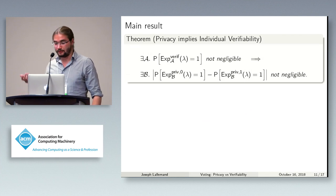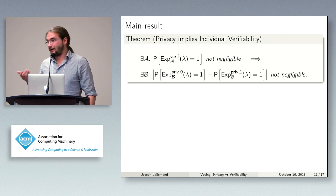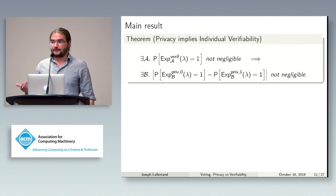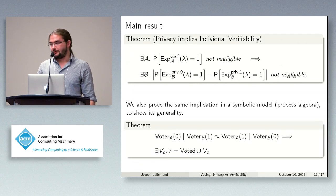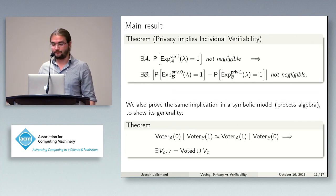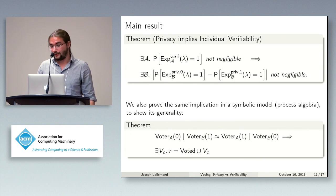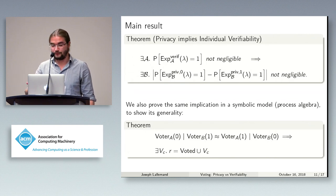With this definition, we can state our main result: privacy implies individual verifiability, in the sense that if there is an attacker with non-negligible advantage in the verifiability game, then there is an attacker with non-negligible advantage in the privacy game. We also prove the same result in a completely different model — a symbolic model similar to process algebra — showing that this is a general property of voting systems, not dependent on the precise choice of model.